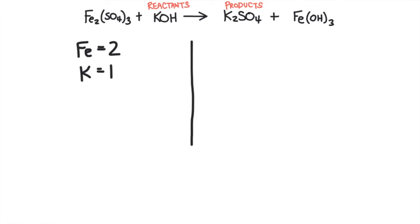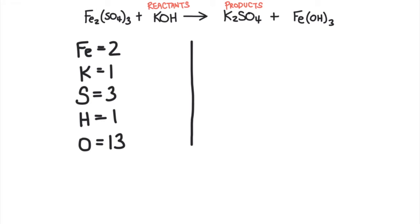one potassium atom, three sulfur atoms, one hydrogen atom, and 13 oxygen atoms. There's one oxygen in the potassium hydroxide, and then there are four oxygens in the sulfate. We have to multiply that by three because there's a three on the outside, so that's 12 plus one, which is where the 13 oxygen atoms come from.